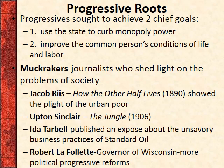Jacob Riis is probably the most important muckraker from this time period. He was a photographer who published How the Other Half Lives in 1890, showing the plight of the urban poor. Upton Sinclair is the author of a novel called The Jungle in 1906 — we'll talk about that. Ida Tarbell published an exposé about the unsavory business practices of Standard Oil, shedding light on Rockefeller's use of pools and trusts, which eventually led the government to crack down and break up Standard Oil. And Robert La Follette started as a senator in Wisconsin, eventually became governor, and was a big proponent of progressive reforms not just in that state but elsewhere.